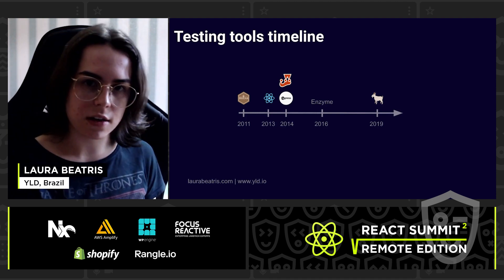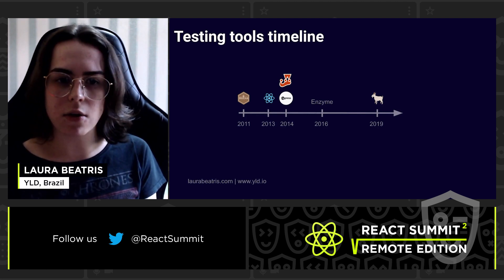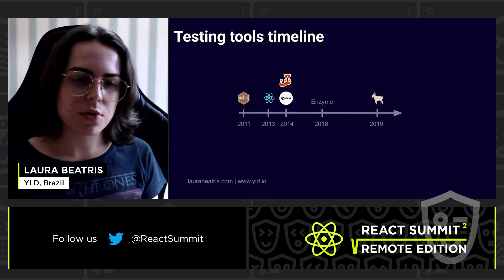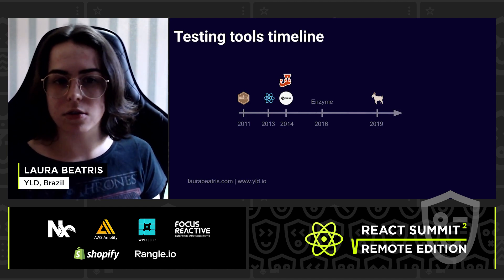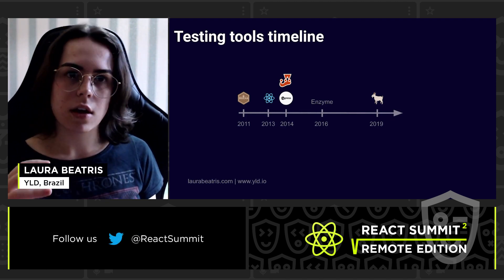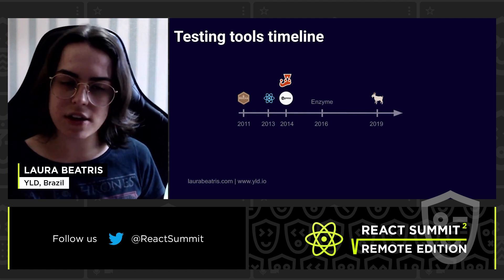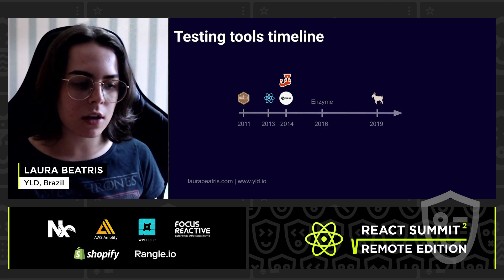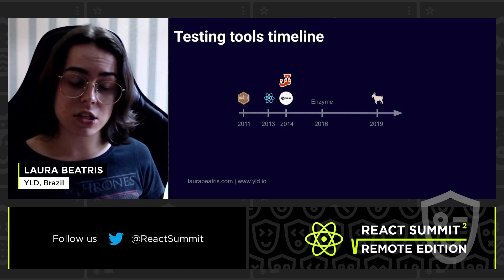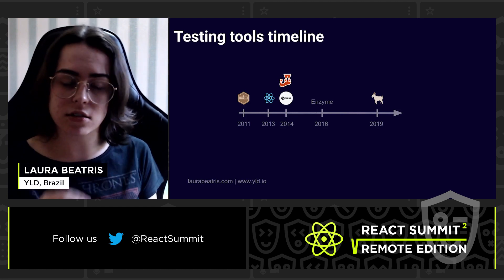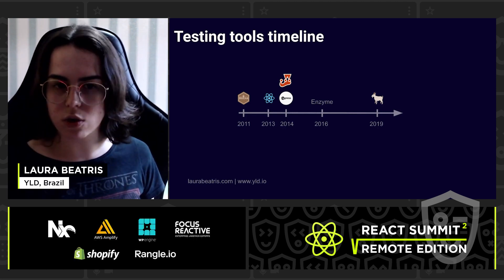When React was first released in 2013, we didn't have a clear tool to render a component and make assertions about its output. In 2014, Jest came out, also released by Facebook, and it really shifted the whole community because it introduced a test runner style that didn't require a lot of configuration. It greatly reduced that overhead, and nowadays Create React App already ships with Jest installed and pre-configured, so you create an application and already have a test runner ready to go.